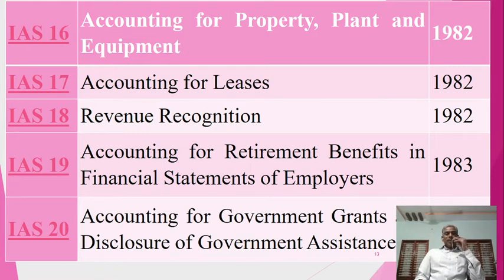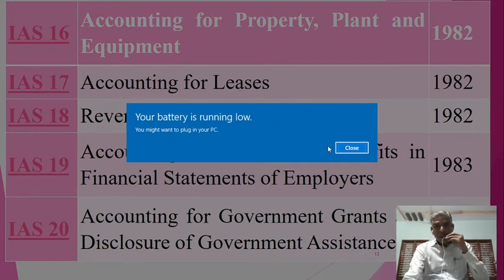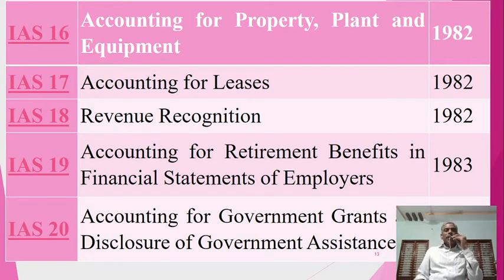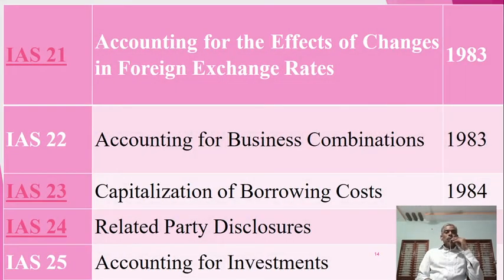IAS 17 is on accounting for leases, established in 1982. IAS 18 covers accounting for retirement benefits in financial statements of employers, established in 1983. IAS 20 is on accounting for government grants and disclosure of government assistance, established in 1983. IAS 21 addresses accounting for the effects of changes in foreign exchange rates, established in 1983.